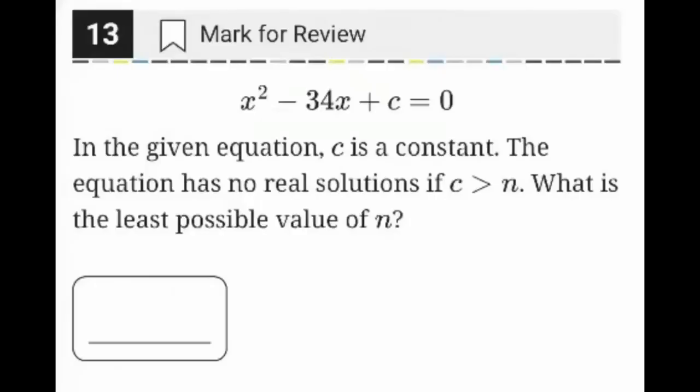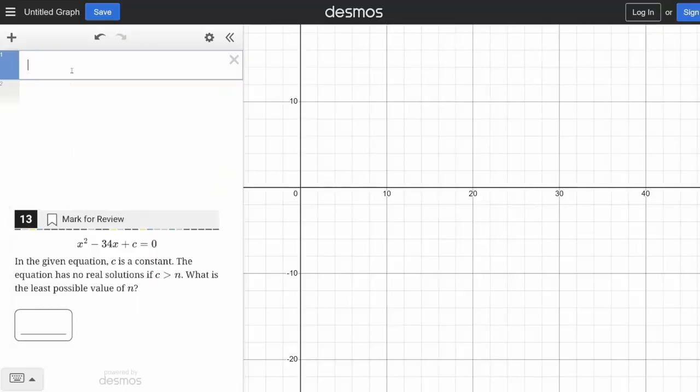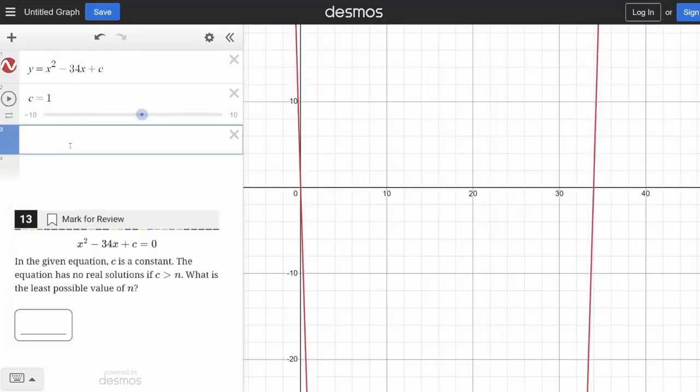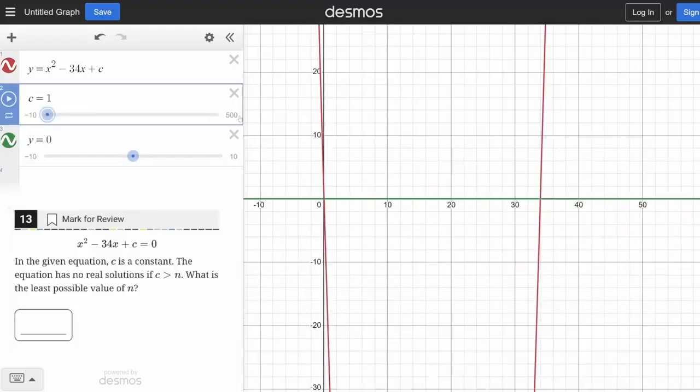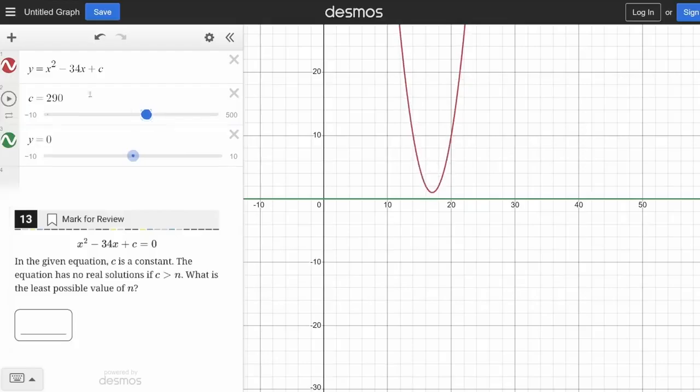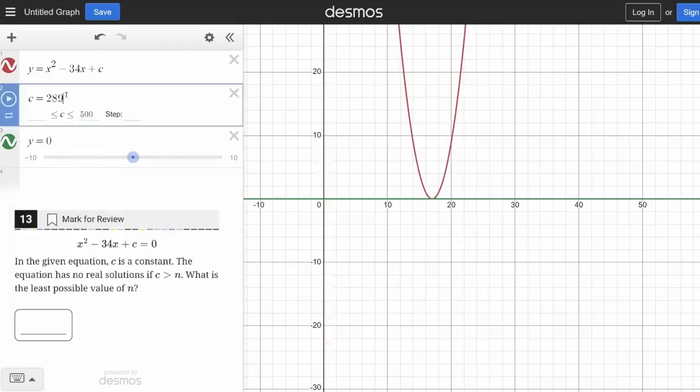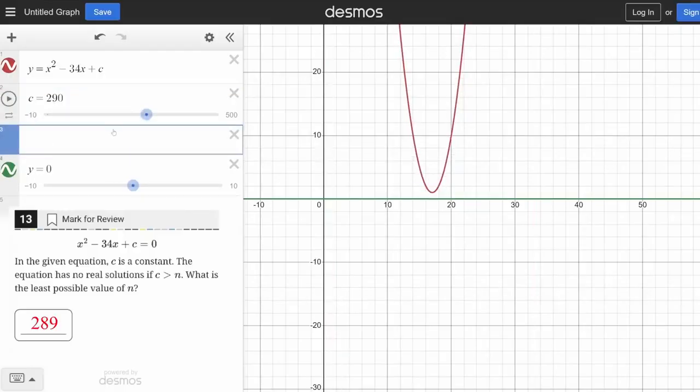In this problem, we're given a quadratic equal to zero and told the equation has no real solutions when c is greater than n. The easiest way to think about no solutions is with a system of equations, so we want to do what we did earlier in the video and split each side into its own equation. Now the question becomes simpler. It's asking what does c need to be greater than for our quadratic to be above the x-axis? So we drag our c until the quadratic reaches the x-axis and see that any value above 289 is above the x-axis. Therefore, 289 is our answer.